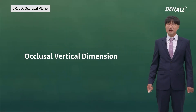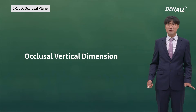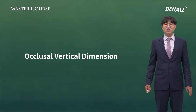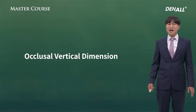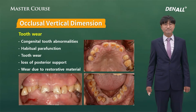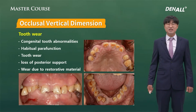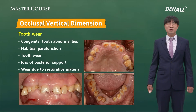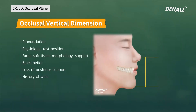Next, vertical dimension. Regarding vertical dimension, I believe you are more familiar with this than CR. It means the superior-inferior relationship of the maxilla and the mandible when the teeth are occluded in maximum. VD can be decreased due to tooth wear from congenital tooth abnormalities, habitual parafunction, tooth wear, loss of posterior support, and wear due to restorative material. The assessment of VD loss is based on pronunciation, physiologic rest position, facial soft tissue morphology support, bioesthetics, loss of posterior support, and history of wear.